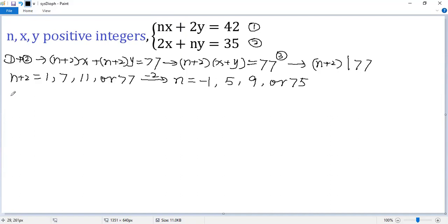Let's do 1 minus 2. So we get n minus 2x, n minus 2 times x plus 2 minus n times y equals 7.